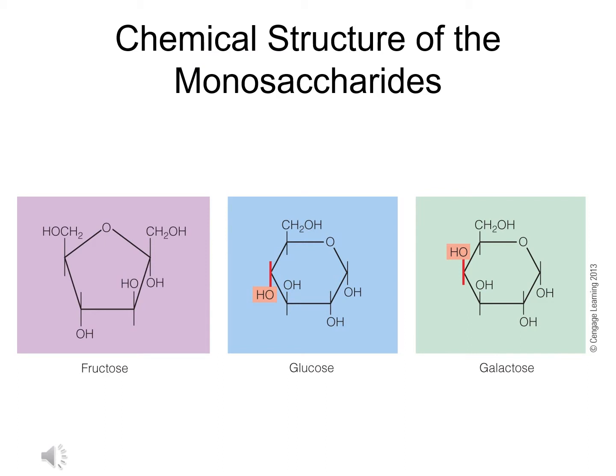If we take a look at the chemical structures of these monosaccharides, note glucose and galactose — they are very similar in their arrangement of the molecule. The only difference is the placement of one single hydroxyl group. Fructose, on the other hand, is completely different. Whereas glucose and galactose are referred to as hexoses, which means six sides, fructose has five sides. So this is noted as being a pentose. The way that the molecules are arranged is what determines how sweet they're going to be when we consume them.